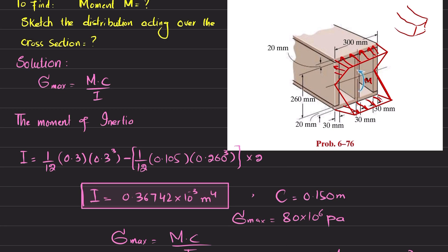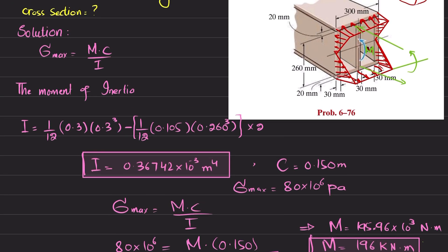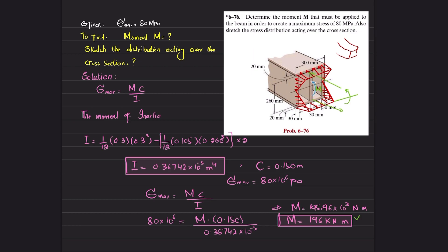The stress distribution is zero at the neutral axis. Overall, the compressive force resultant acts on the top portion and the tensile force resultant acts on the bottom portion, and together they produce a moment about the axis equal to 196 kN·m. This was all about problem 6.76.